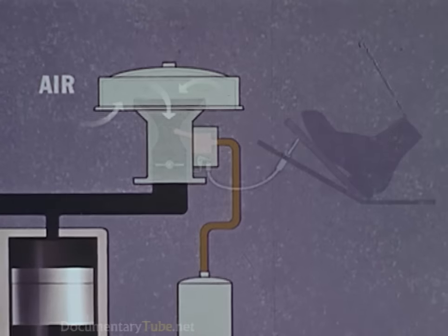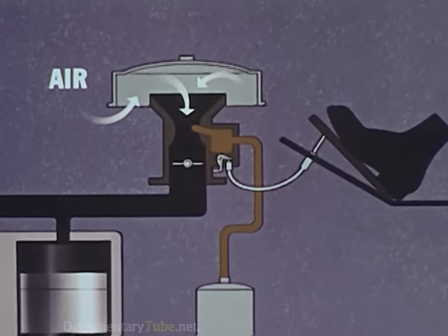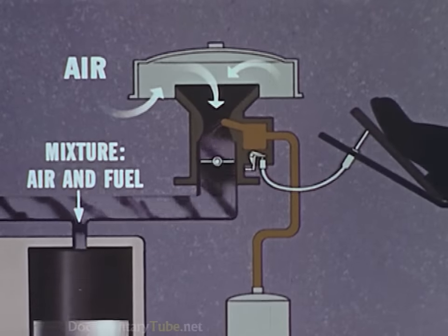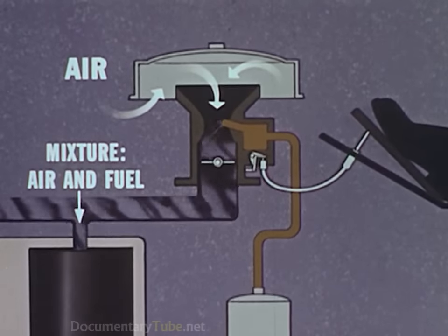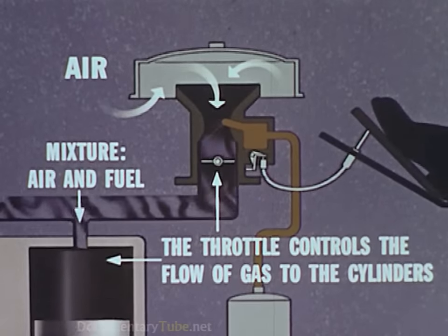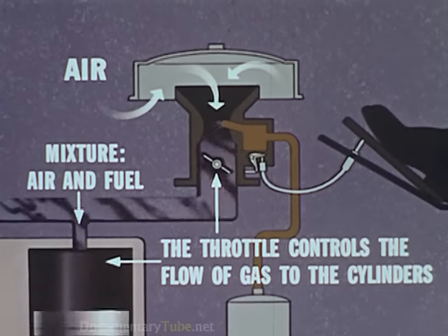Here's a closer view of the carburetor. A linkage connects the accelerator pedal with a valve in the carburetor. Stepping on the gas opens this valve wider, increasing the gas flow and speeding up the engine. Easing off on the pedal reduces the flow and the engine slows down.